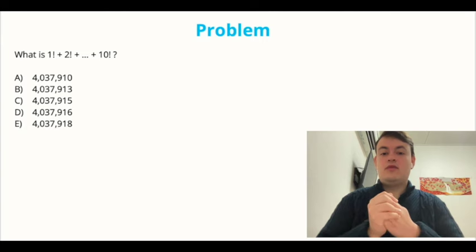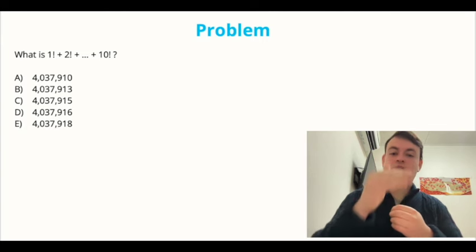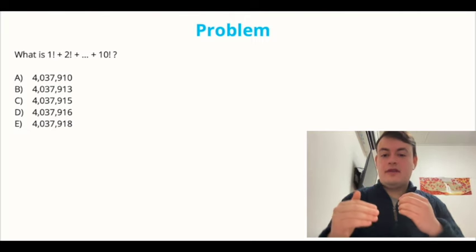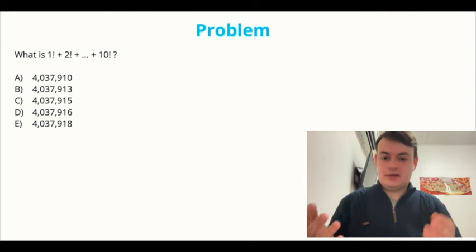So I will now present you the problem. Here it is. What is 1 factorial plus 2 factorial plus 3 factorial up until 10 factorial. And here are the five options the GMAT gives us.